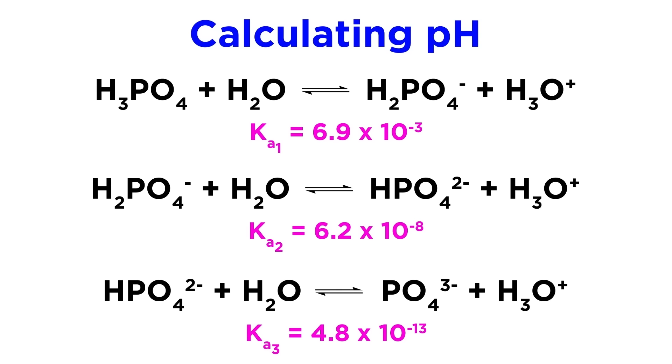All of this complicates things like pH calculations quite a bit, as we can't simply take a Ka value and do a simple calculation. Phosphoric acid will produce a certain amount of hydronium by virtue of its first deprotonation, but it will then generate more hydronium upon its second and third deprotonations, and for certain acids, we must consider all of the relevant equilibria in determining the hydronium concentration in solution.